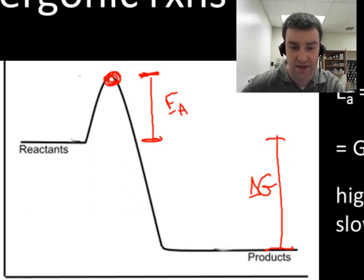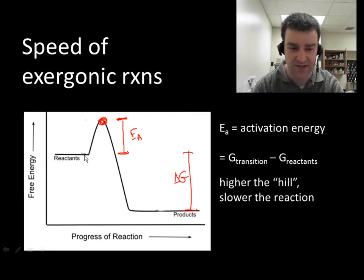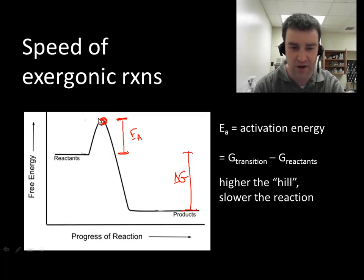And so the idea here is that the higher the activation energy, the higher the hill as it were, the slower the reaction is going to be. You can imagine that individual particles are going to need enough energy to get over this hill. And then they can release a tremendous amount of energy when they become the actual product.